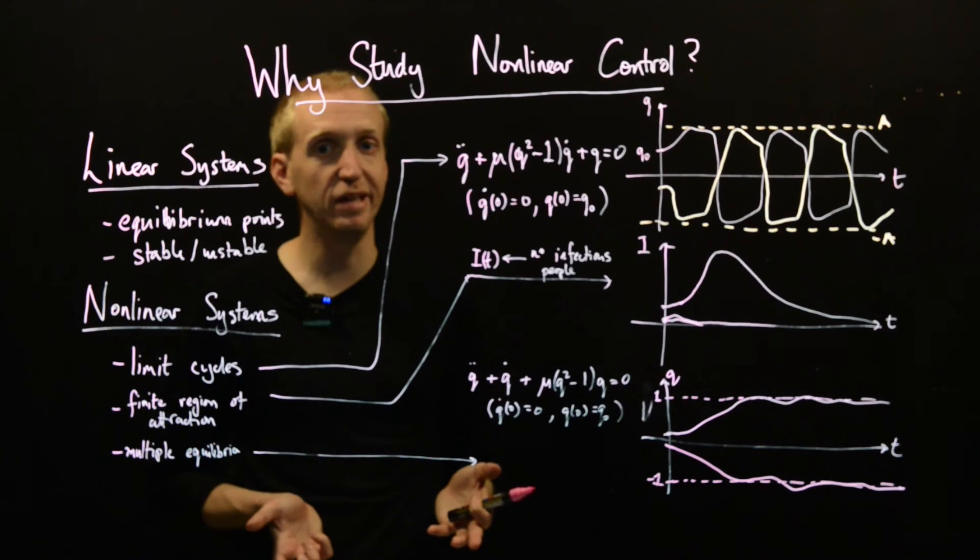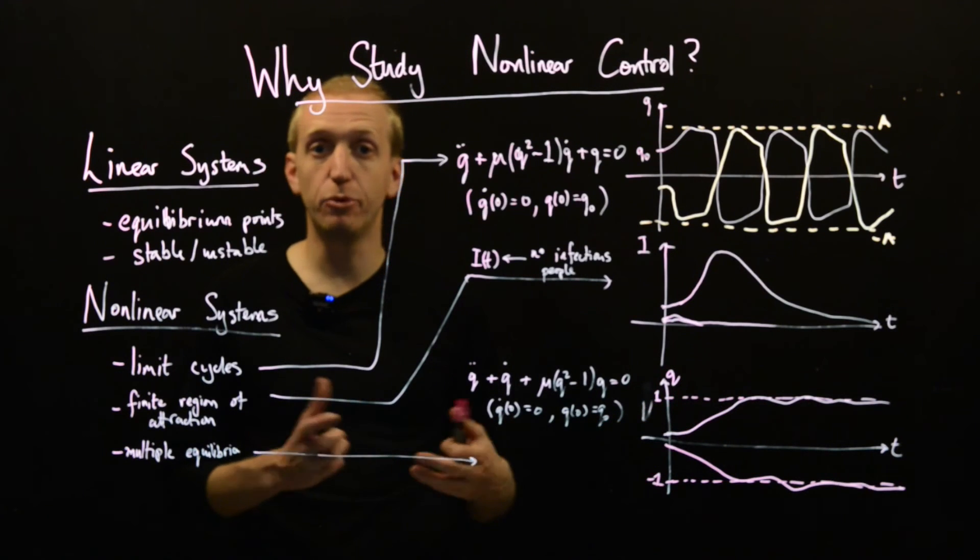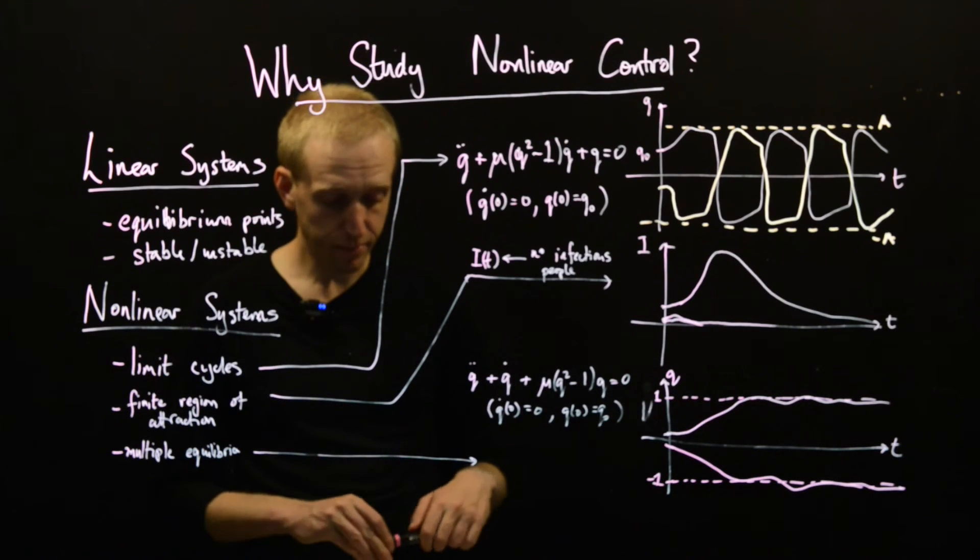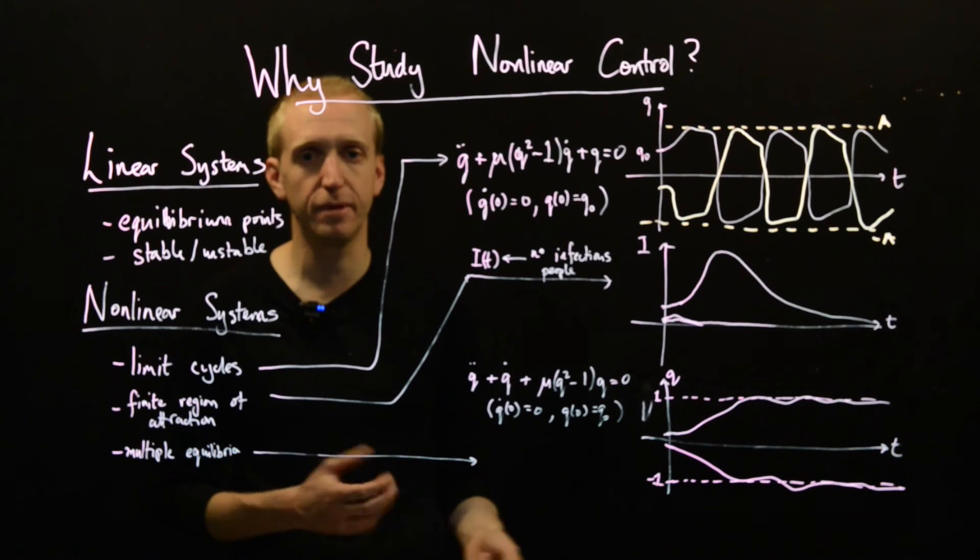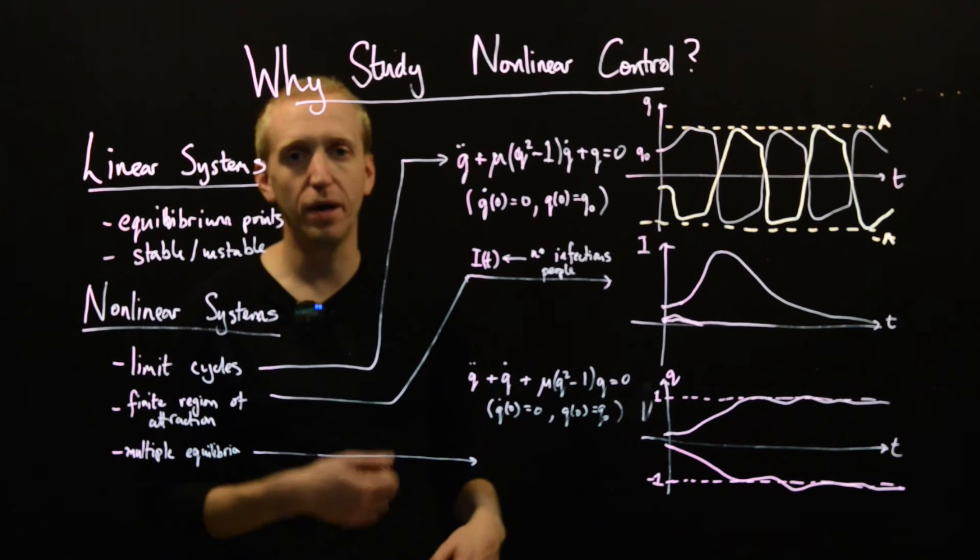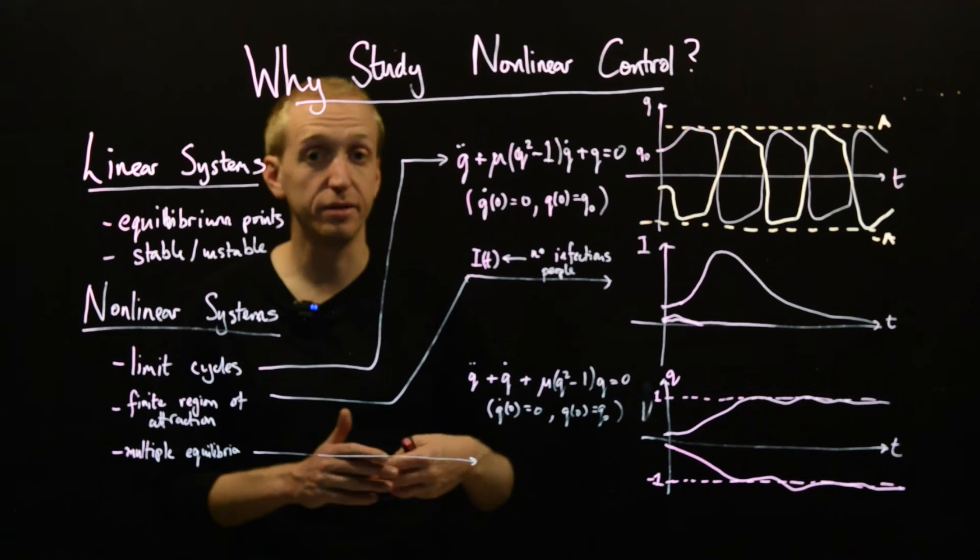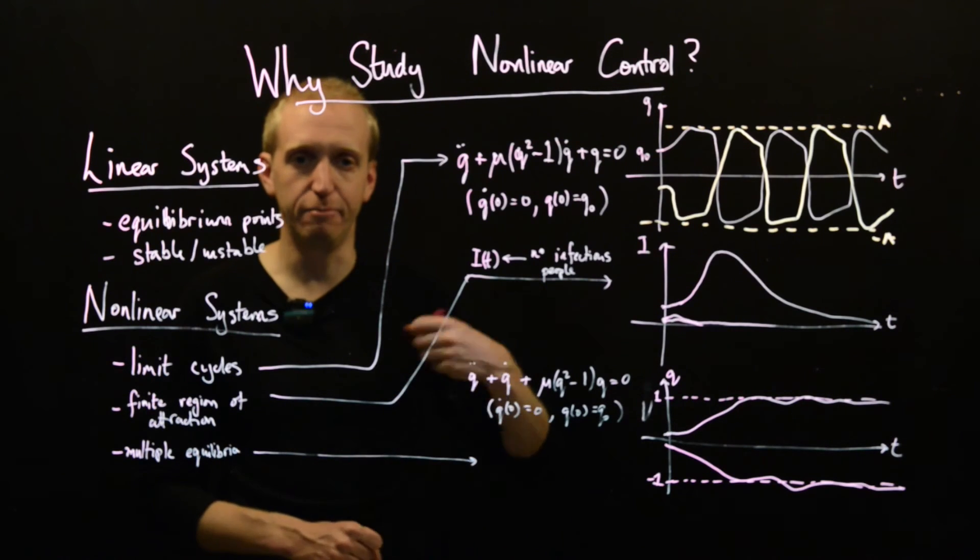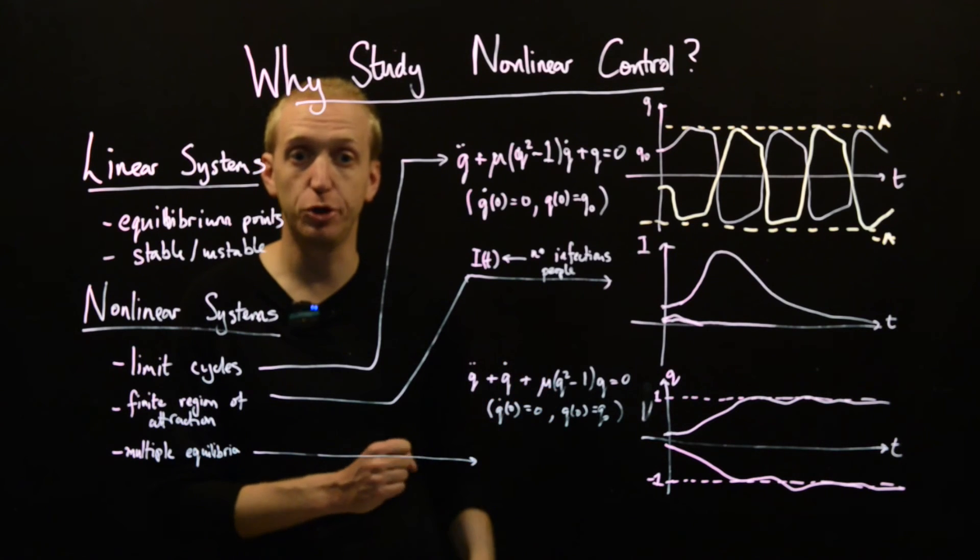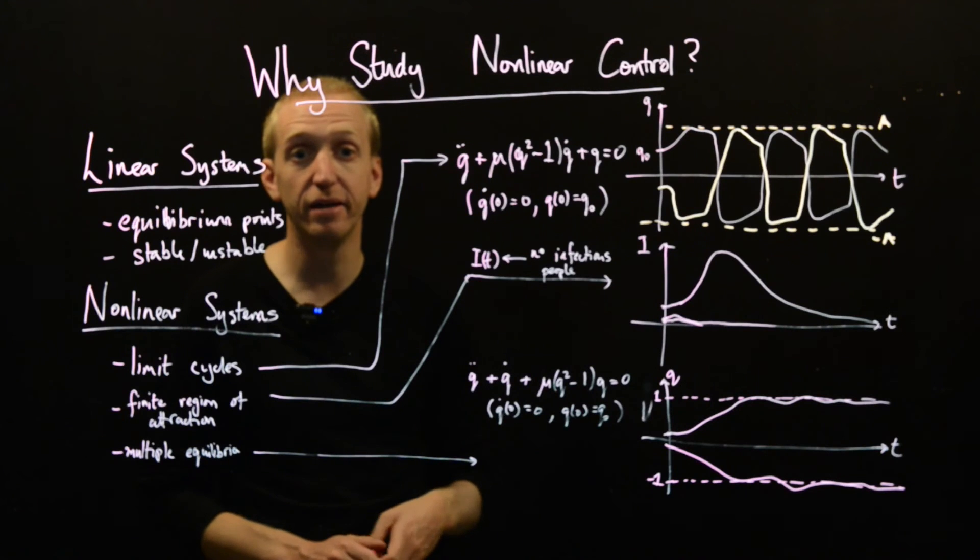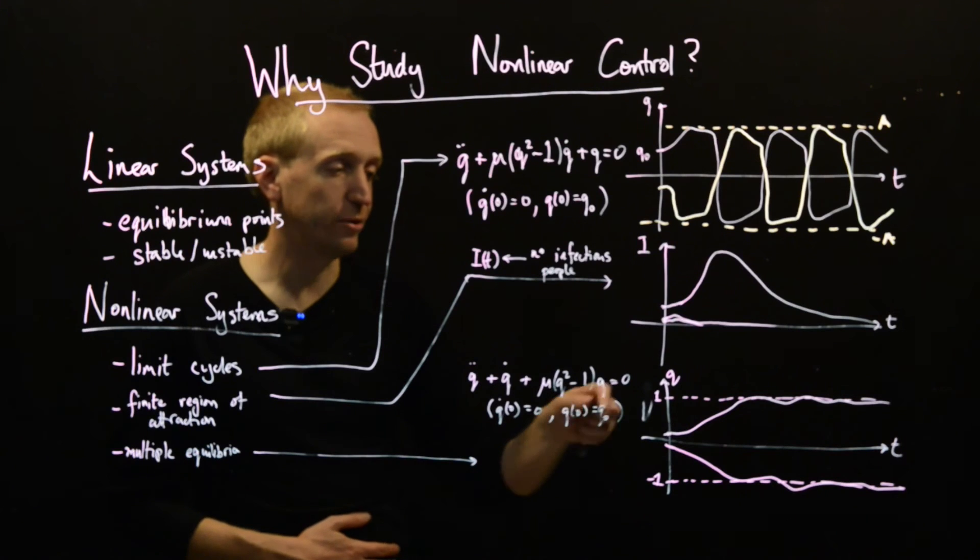And this is something that can't happen in linear systems either. So why is this useful? Well, imagine that we're trying to build some memory for a computer. So we want to be able to program what this memory can store. And in the case of computers, you store 1s or 0s. So we want, depending on what we choose, our system for storing memory to settle down and permanently stay in a position corresponding to a 1 and a position corresponding to a 0, depending on what we want to put in our memory. Well, that's exactly what you can achieve with a system with multiple equilibrium points.